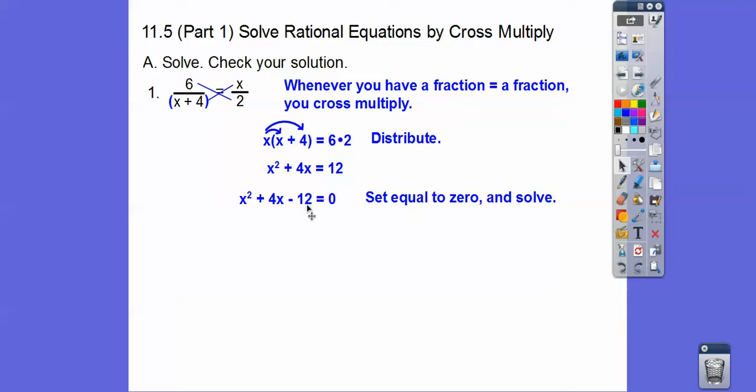Factors of negative 12 that add to positive 4. Well 1 times 12 equals 12. 2 times 6 equals 12. And 2 and 6 are going to be the pair that gets me negative 12. So I'll go plus 6 times a negative 2. That'll get me that positive 4. And then we set those factors equal to 0. And then solve.